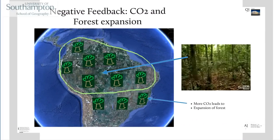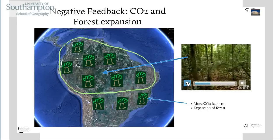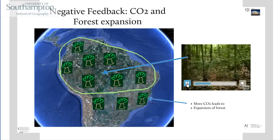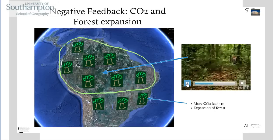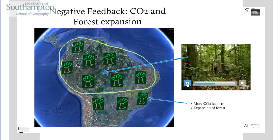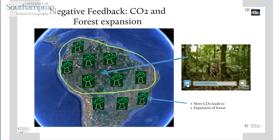Now we're going to look at negative feedback in a climatic situation, and we're going to look at carbon dioxide — CO2 — and forest expansion. What happens is if we have a tropical forest like we have in South America, let me play you a little bit of a video of someone walking through exactly such a tropical forest.